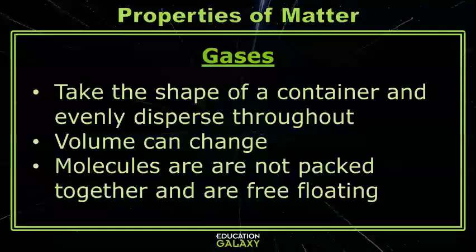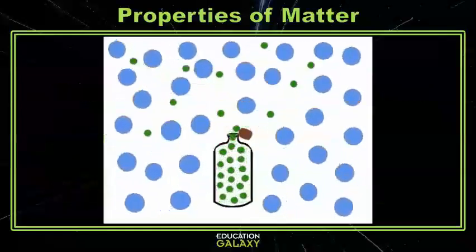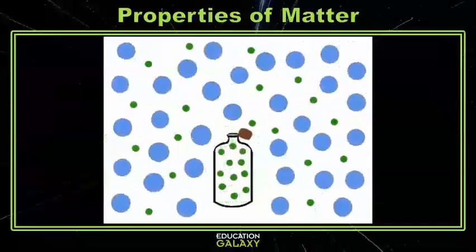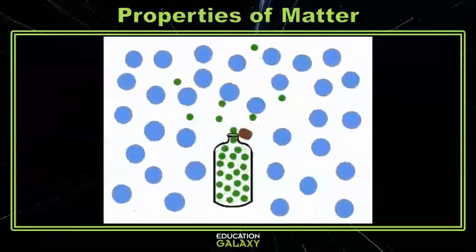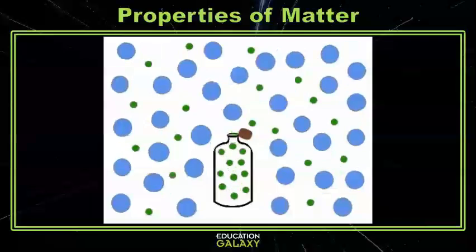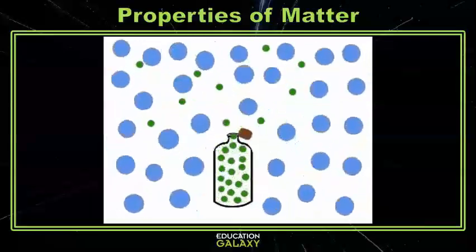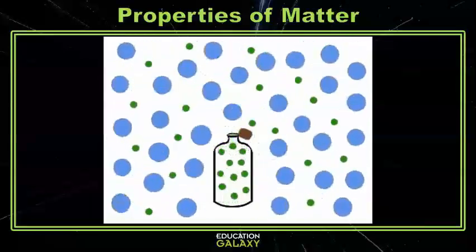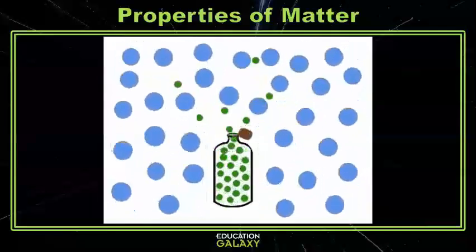Gas matter not only will take the shape of a container, but will also fill it and evenly disperse itself throughout the container. Gases have the least packed atoms and molecules, and this is why the volume of a gas can change. You can see that as soon as we open our bottle, all of the molecules of gas evenly disperse into the air. Being able to change the volume of gas is why you can fill up your bike tire with air, and you can keep pumping more air into the same volume, creating air pressure.